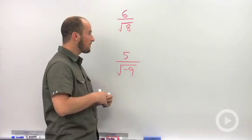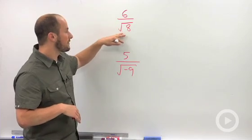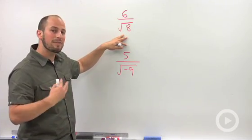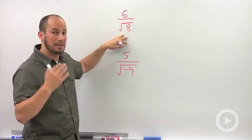We're going to go back to a problem that we already know how to do: 6 over root 8. Whenever we're dealing with a problem like this, we have to rationalize the denominator, get rid of that square root.